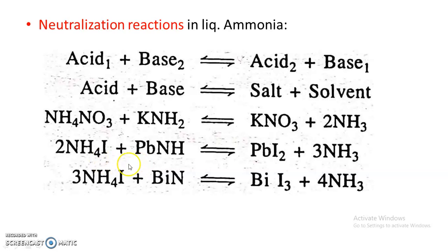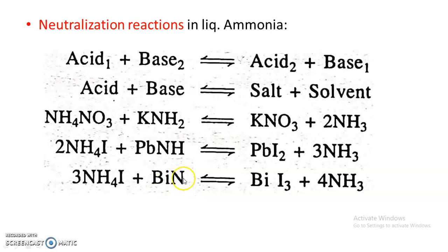Another example: ammonium iodide acts as an acid since it produces ammonium ion. When it reacts with lead imide, which produces imide ion (NH2-) upon dissociation and acts as a base, the acid-base reaction yields lead iodide as salt plus ammonia as solvent. Similarly, ammonium iodide combined with bismuth nitride — bismuth nitride dissociates to form N3- (nitride ion) and acts as a base — yields bismuth iodide as salt and ammonia as solvent. Both are neutralization reactions in liquid ammonia.